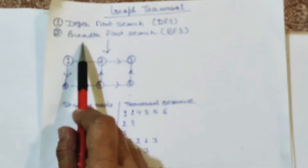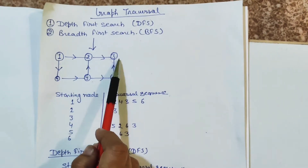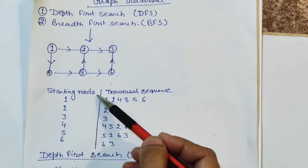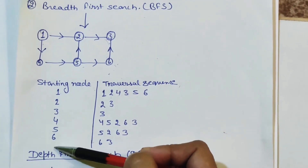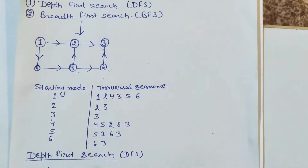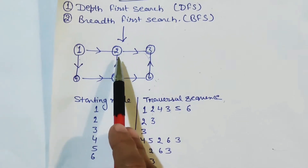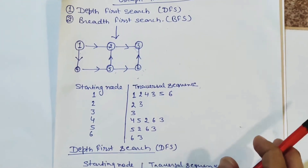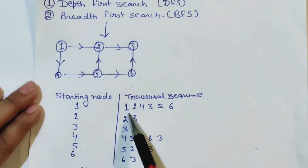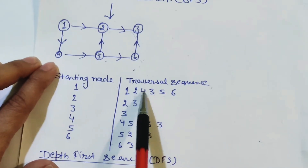First, let's look at Breadth First Search. See this example — we have built a graph. Whatever starting node you take, you traverse its adjacent node, its neighbor node, and also the neighbor of its neighbor. For example, if we start from node one and go to two, then one's other neighbor is four as well. So we write: one, two, four.